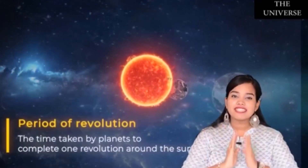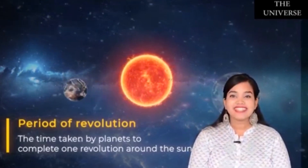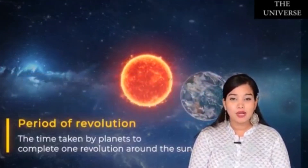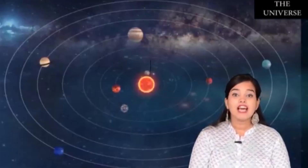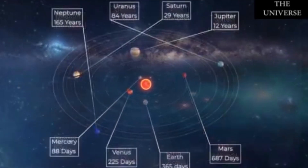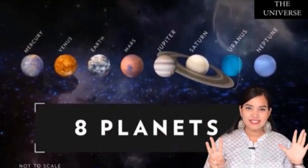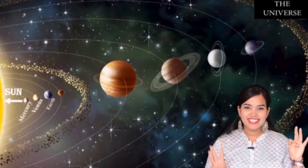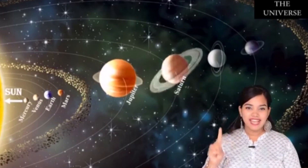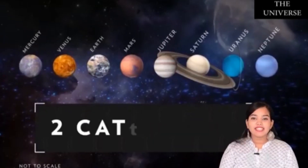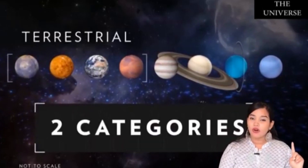Planets also revolve around the Sun in fixed elliptical paths known as their orbit — this is known as the period of revolution. Each planet takes a different amount of time because they are at different distances from the Sun; the farther the planet, the more time it takes to complete one revolution. Our solar system has eight planets. In order of increasing distance from the Sun, the planets are: Mercury, Venus, Earth, Mars, Jupiter, Saturn, Uranus, and Neptune.